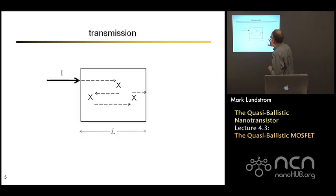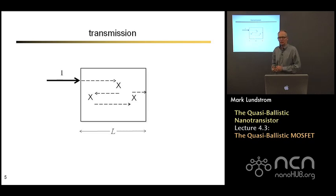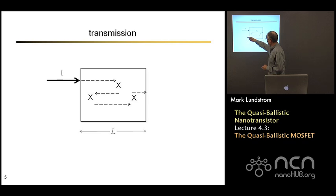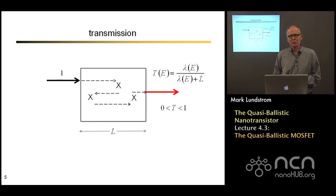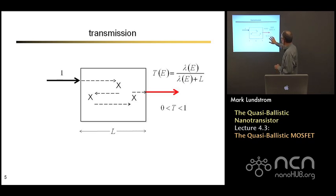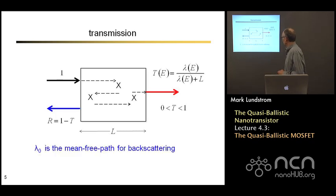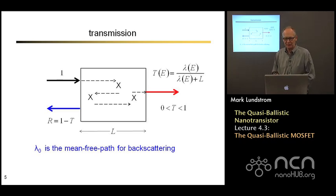Our physical picture for transmission is that we have some slab or channel. Electrons are injected from one side — maybe the source — they propagate across, they undergo some back scattering, some of them return to the source, but some transmit across. We've derived an expression for the transmission using a relatively simple model that actually works remarkably well in practice, giving us a simple description: a number between 0 and 1 in terms of the mean free path for back scattering.